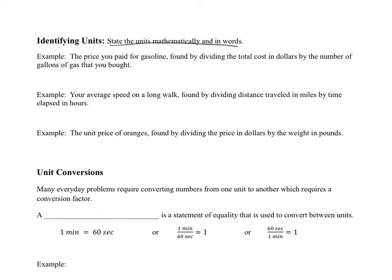When we look at identifying units, we want to state the units mathematically and in words. So both of these. So for example, the price you paid for gasoline is found by dividing the total cost in dollars by the number of gallons of gas you bought. So dividing the total cost in dollars, so I'm just going to write dollars again, divided by gas gallons. And you'll get exactly what you see at basically every gas station would be price per gallon. Per just means divide. So in words, we could write price per gallon.